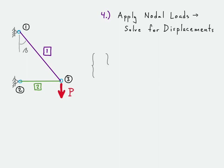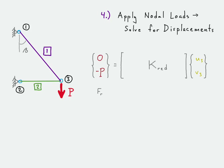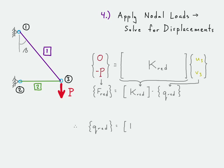With the reduced stiffness matrix equation, we apply the node loads to solve for the displacements. We replace the placeholder forces with the actual applied forces: nothing in the x direction, and negative P in the y direction. To solve for the displacements, we invert the reduced stiffness matrix and multiply it against the force vector. That gives us the displacement results at node three.